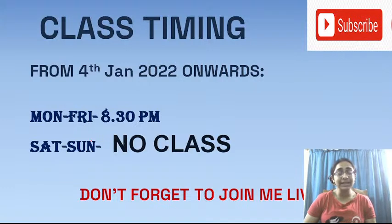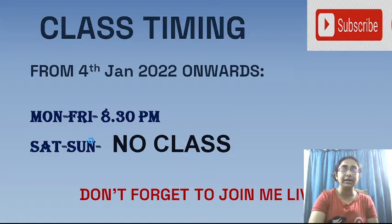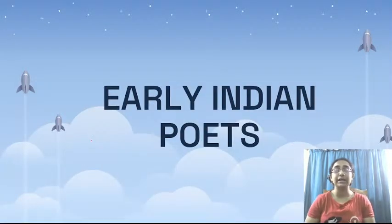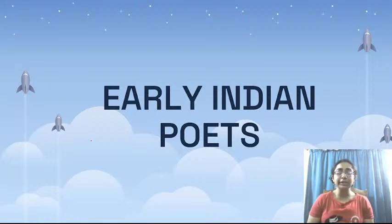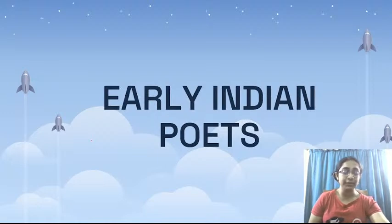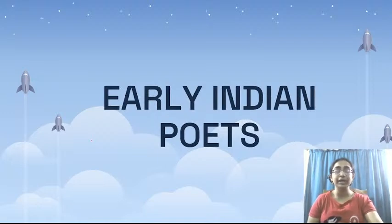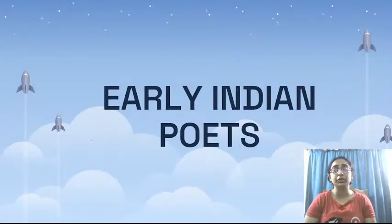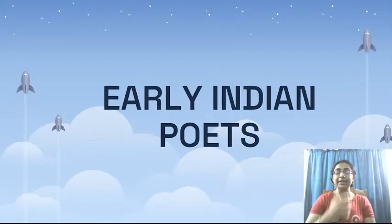In yesterday's class, we discussed the starting points of Indian English Literature. We discussed the definition and talked about Raja Ram Mohan Roy as an Indian writer. Today we will talk about early Indian poets and we will talk about three major poets: Michael Madhusudan Dutta, Manmohan Ghosh, and Ramesh Chandra Dutt. They are the initiators of Indian poetry in English.